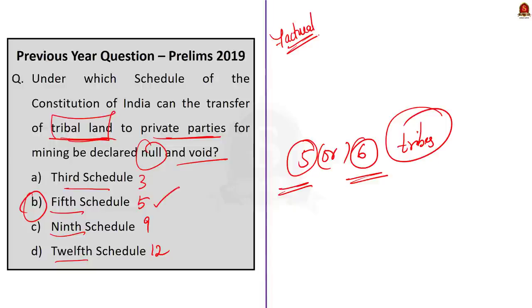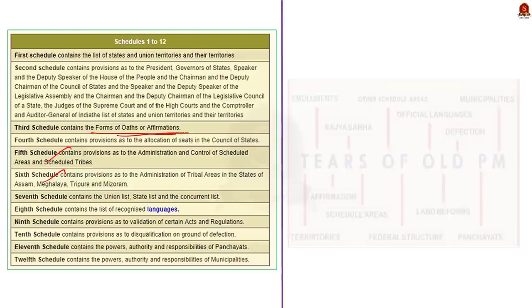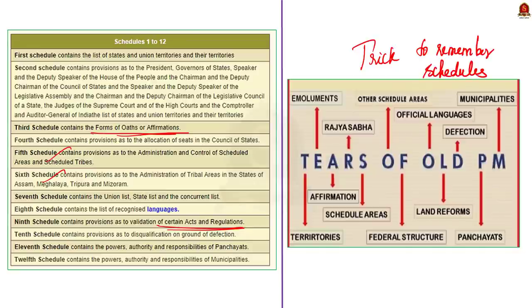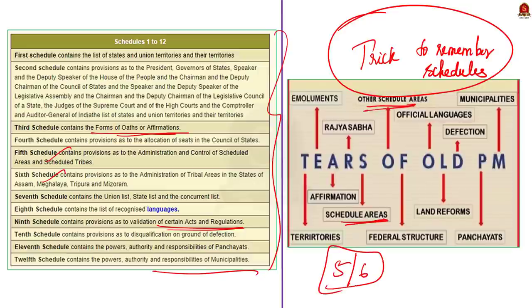The third schedule talks about oaths and affirmations, so it can be eliminated. The ninth schedule covers acts kept away from judicial review, and the twelfth schedule talks about municipalities. So our answer is option B, the 5th schedule. This is a very factual question. I didn't remember all 12 schedules, but I knew something related to tribes is present in the 5th and 6th schedule, and with that knowledge alone I approached and answered this question.